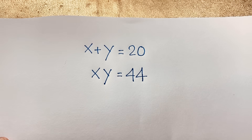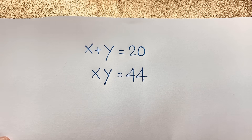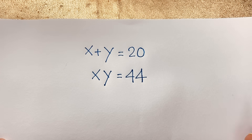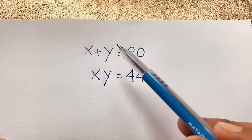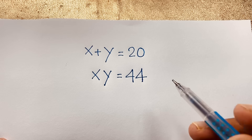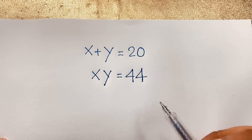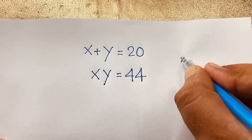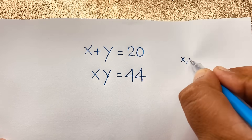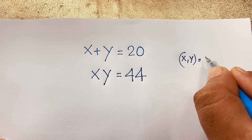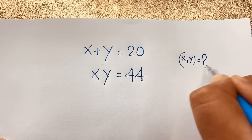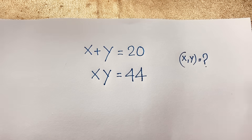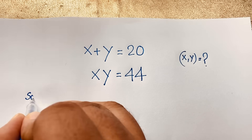Hello everyone, welcome to my YouTube channel. Today we have solved an interesting general maths olympiad question: x plus y is equal to 20, xy is equal to 44, and we need to find the values of x and y. Let's go through the math solution step by step.